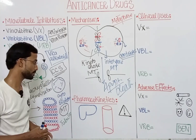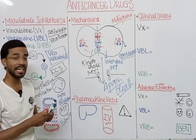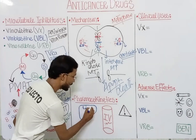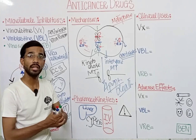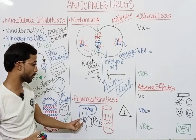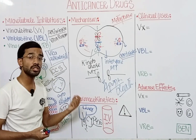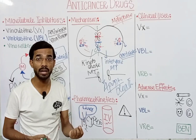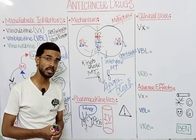Regarding pharmacokinetics, these drugs are given through the IV route. Vinca alkaloids are metabolized in the liver via cytochrome P450. They are then released into the bile and excreted through the feces. Therefore, patients with liver impairment or biliary obstruction should not be given Vinca alkaloids, because impaired liver metabolism leads to accumulation and toxicity of the drug.